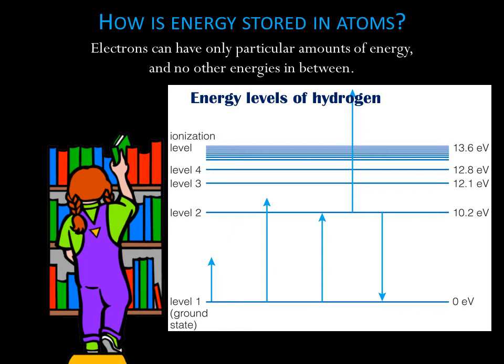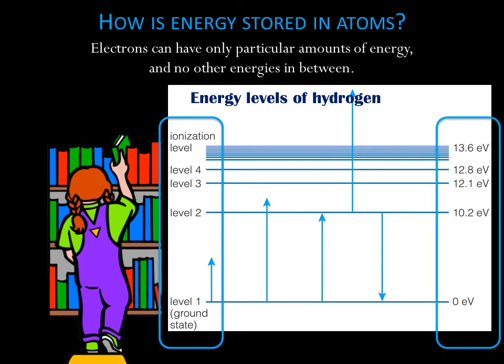The possible energies are known as energy levels of an atom. This figure shows the energy levels of hydrogen. The energy levels are labeled on the left in numerical order and on the right in energy units, called electron volts, or EV for short.